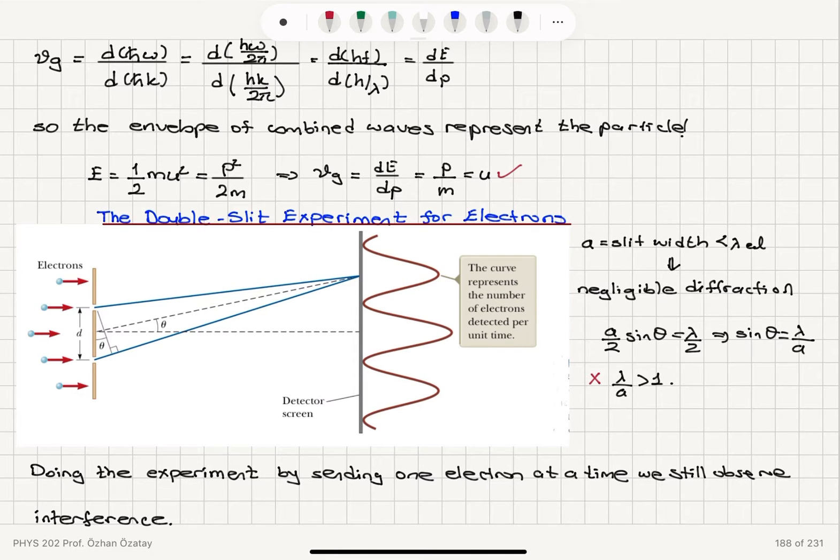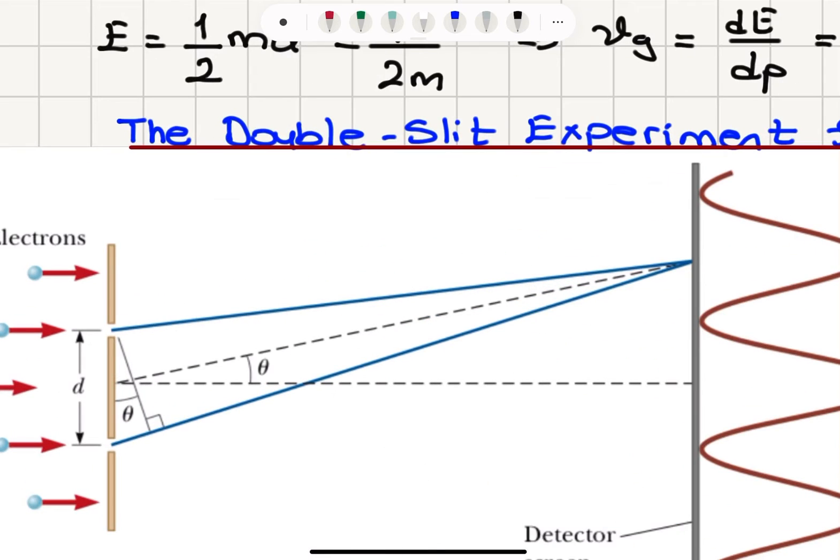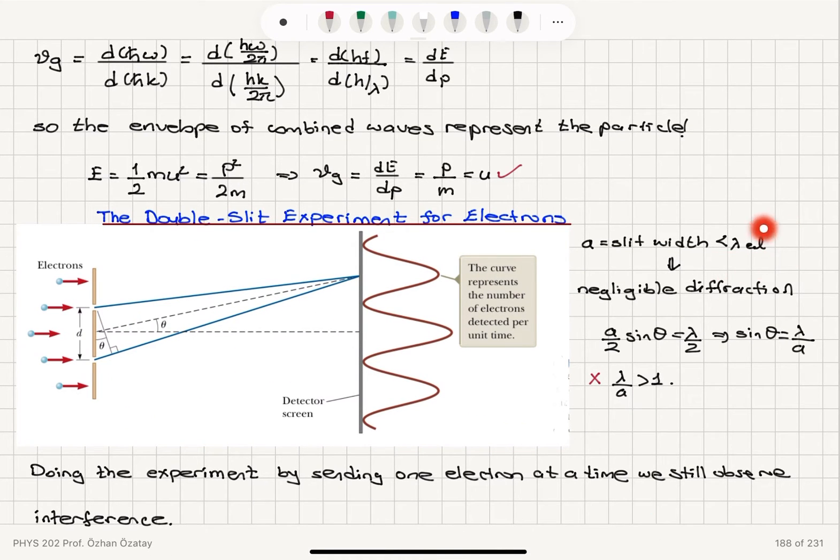Now, this slit width a, the width of this slit, is less than the wavelength of the electron. Then we have a negligible diffraction.